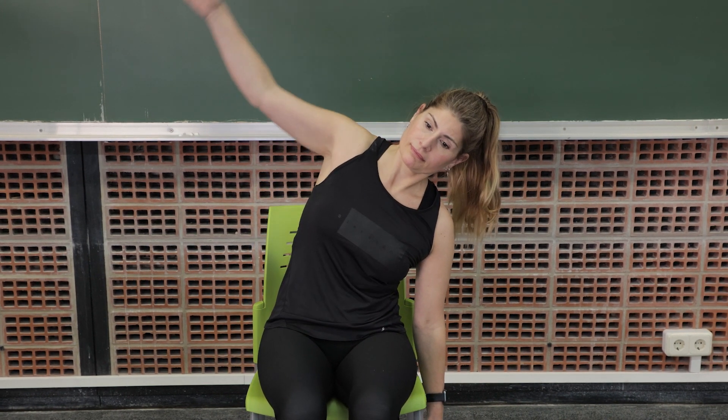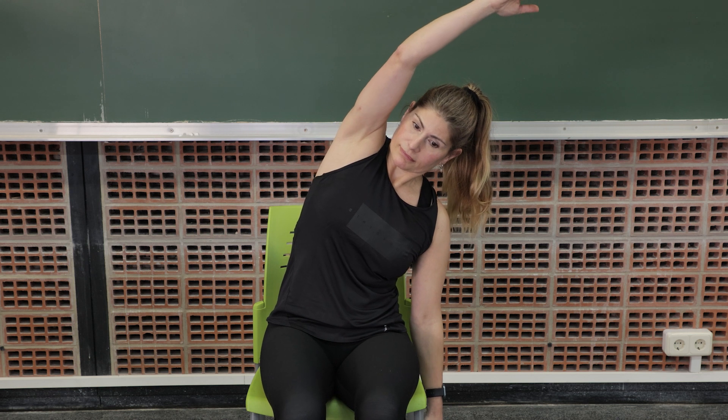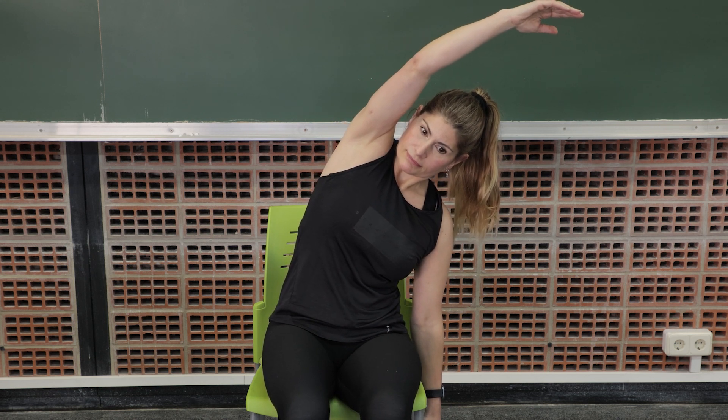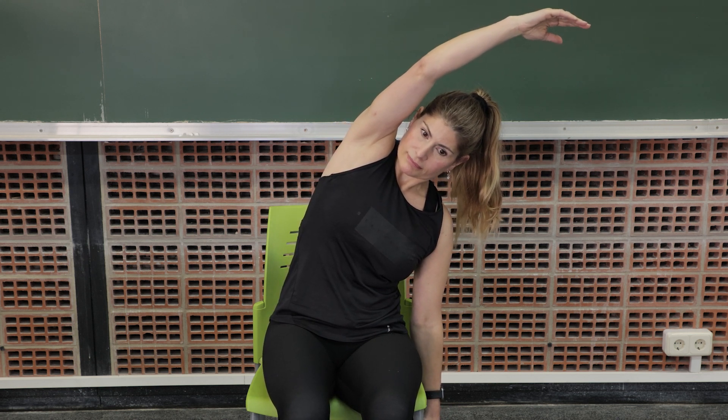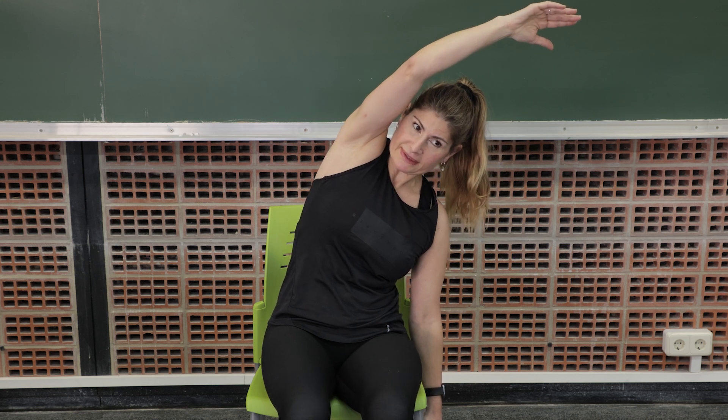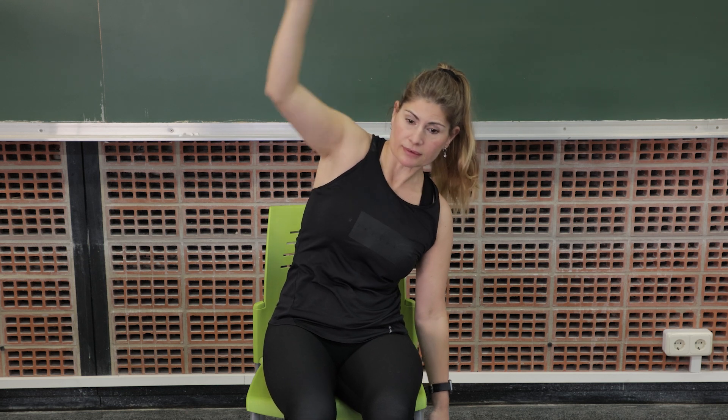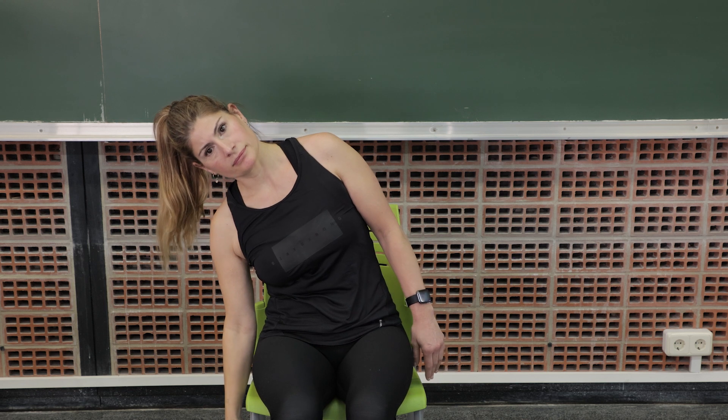Continuing with the trunk stretching, the person will be sitting in the front half of the seat without resting her back on the backrest. She will lean towards lateral flexion of the trunk, while leaving the arm on the same side outside the support, and the opposite arm will move upwards over the head. This same stretching can be repeated in a supine position, bringing the knees to one side and the arms to the other, so there is an opposite rotation between the shoulder and pelvic girdles.